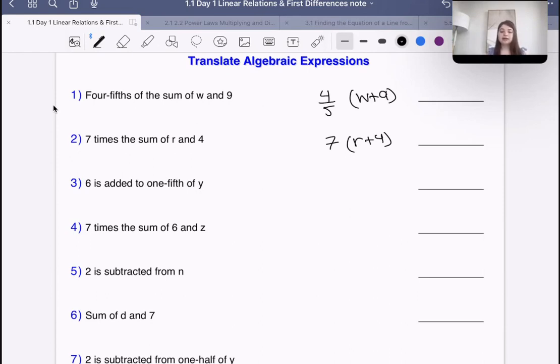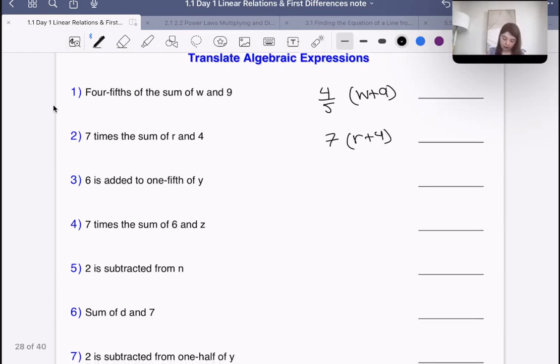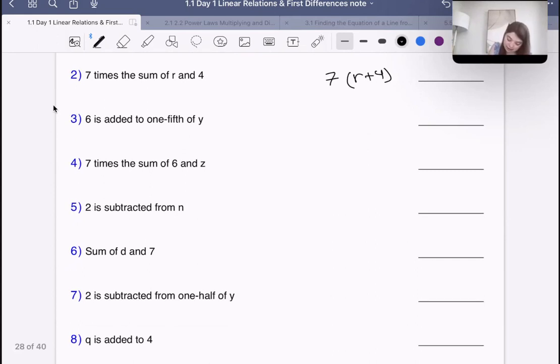Then it says six is added to one-fifth of y. Six is added means it's six plus one-fifth of y. That would be the same as one-fifth times y or y over five. In this case, they made the distinction that it's not one-fifth of the sum of y and six. We take six and add that to one-fifth of just y. The division by five is only happening to y specifically, not to six as well.